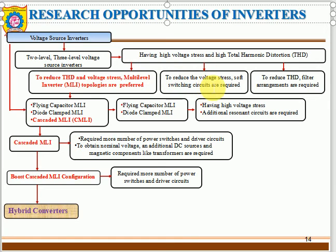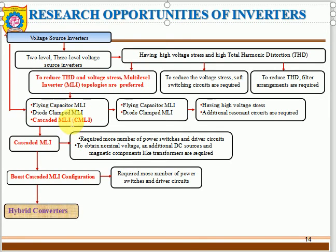To reduce voltage stress, soft switching circuits are required — such as zero voltage switching (ZVS) and zero current switching (ZCS), similar to snubber circuits used for dV/dt and dI/dt problems in the first unit. To reduce harmonics, filters are used. The three types of multi-level inverters are: flying capacitor, diode clamp (neutral point clamped), and cascade multi-level inverters.